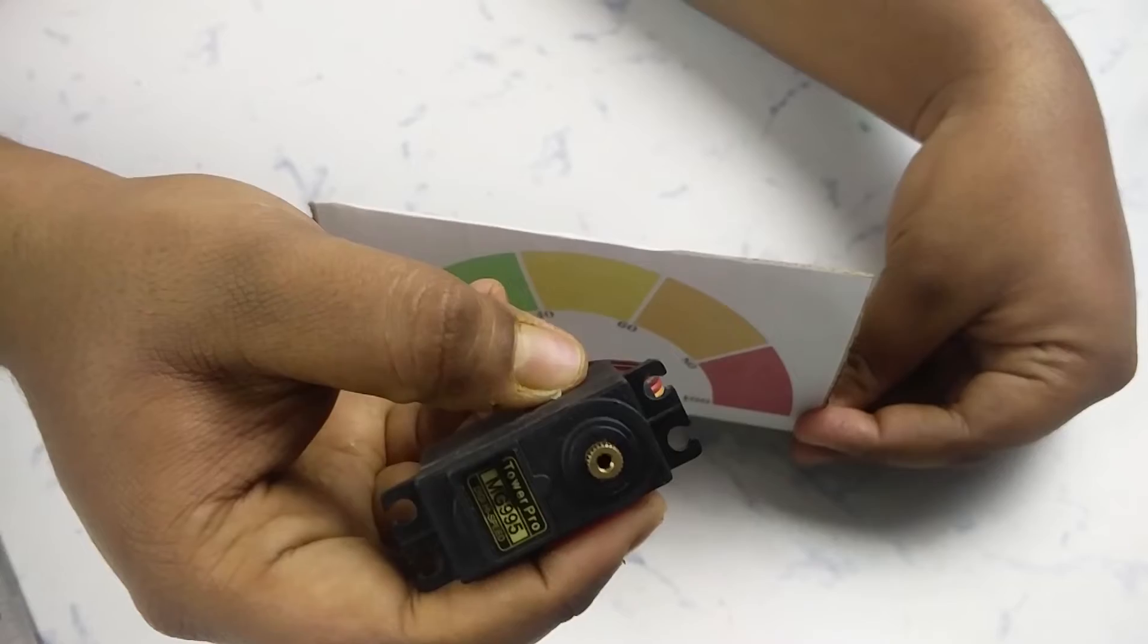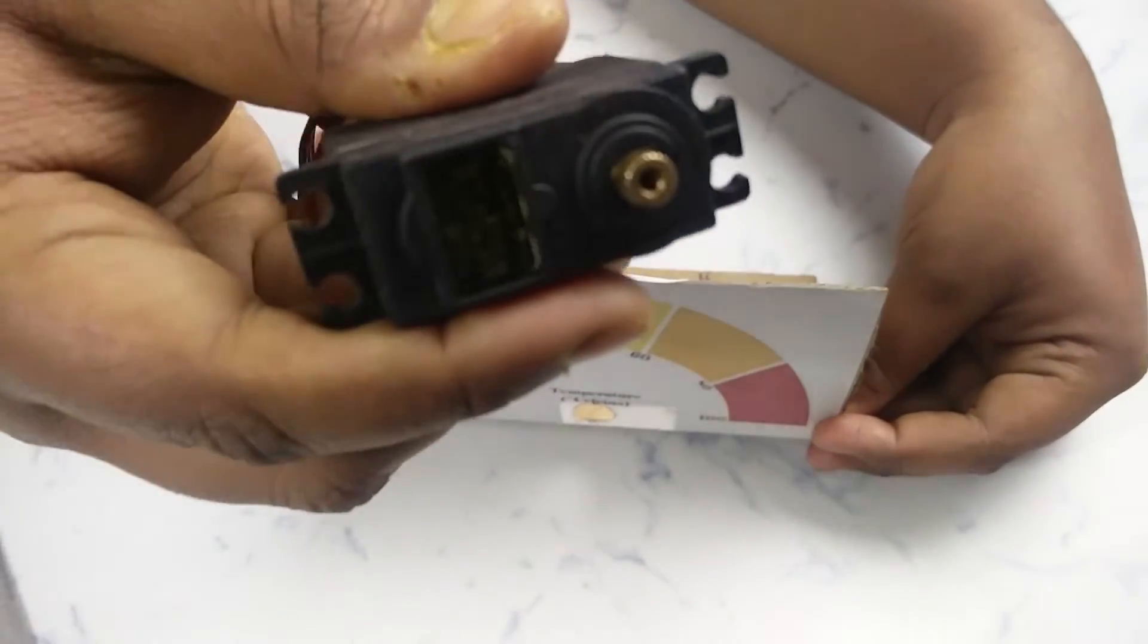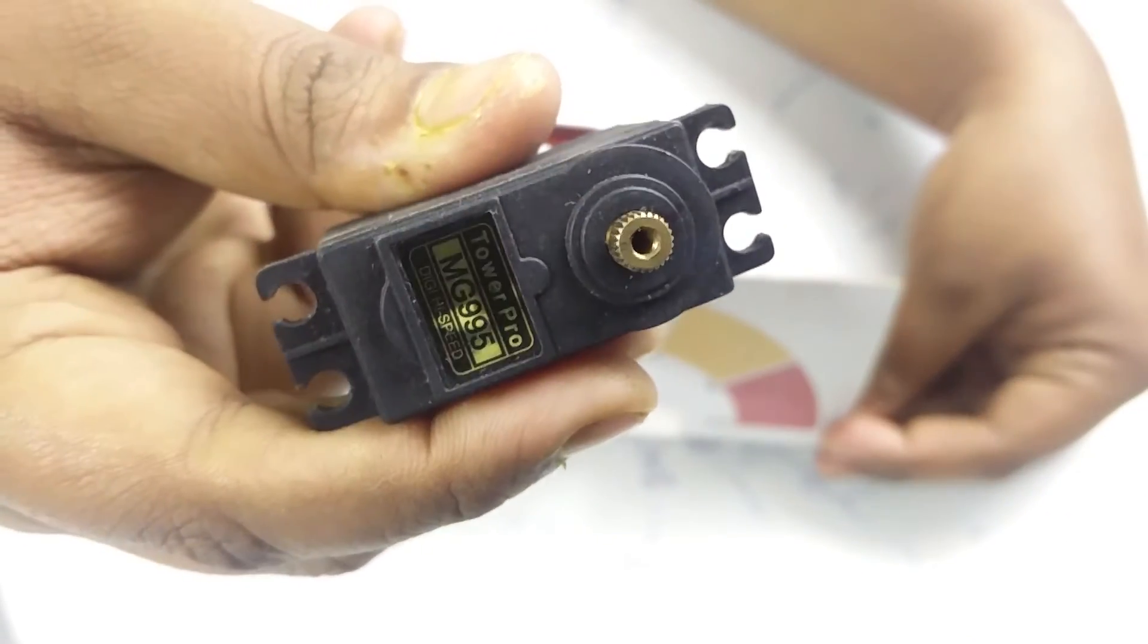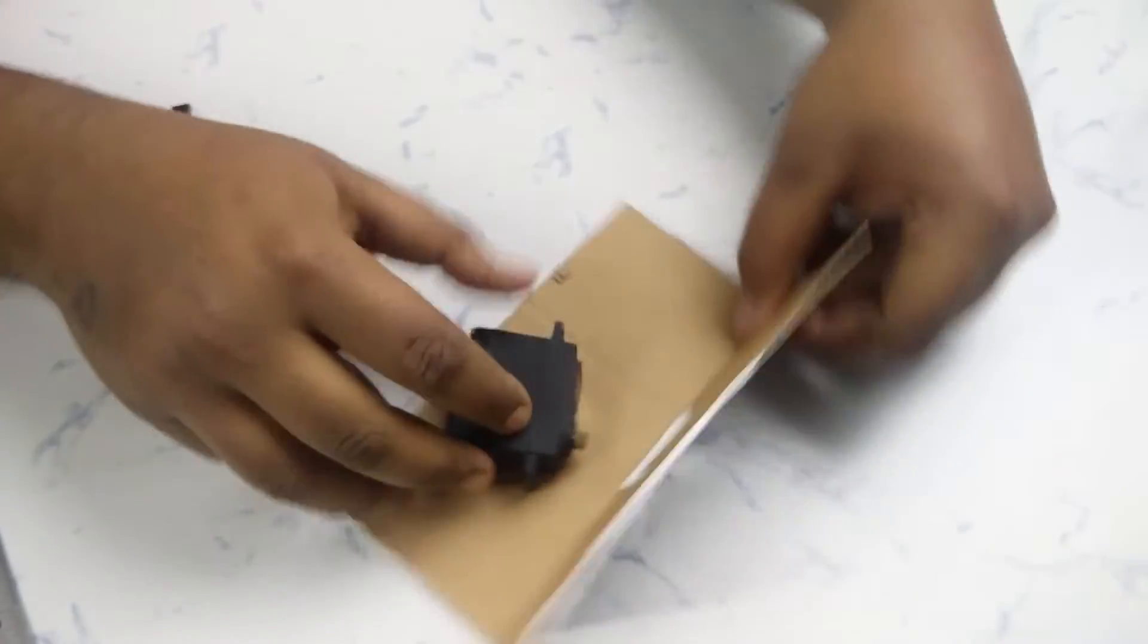Here I am using MG995 180 degree servo motor. Now I will use some hot glue to fix the servo motor to the back side of this analog display.